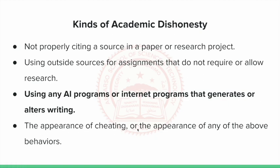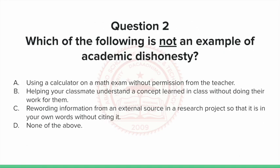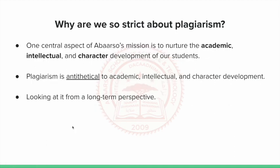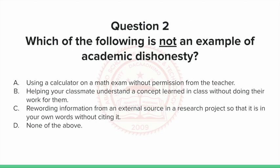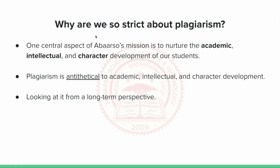Now, question two through Edpuzzle: which of the following is NOT an example of academic dishonesty? A: using a calculator on a math exam without permission from the teacher. B: helping your classmate understand a concept learned in class without doing their work for them. C: rewording information from an external source in a research project without citing it. Or D: none of the above. Respond to this now. So why are we so strict about plagiarism at Abarso?